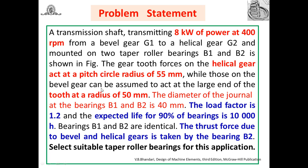First of all, read the problem statement carefully. Write down the given data: power = 8 kW at 400 RPM. Two gears are mounted on the shaft — gear G1 is the bevel gear and gear G2 is the helical gear — mounted on two taper roller bearings B1 and B2. The PCD of the helical gear is 55 mm while for the bevel gear it is 50 mm. Diameter of the journal (shaft diameter) is given as 40 mm.